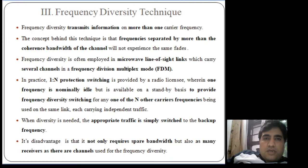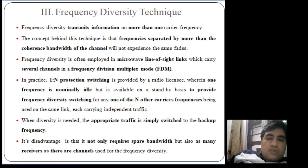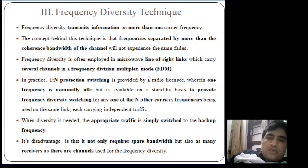First, let us look into the frequency diversity technique. Diversity is basically used to capture all these multiple path transmitted signals so that we can improve the signal-to-noise ratio at the receiver. In frequency diversity, all these transmitted signals are separated from each other in terms of frequency, and the frequency chosen must be more than the coherence bandwidth of the channel, so that each transmitted signal experiences an independent kind of fade and they are uncorrelated with each other.